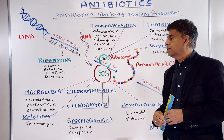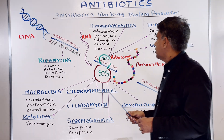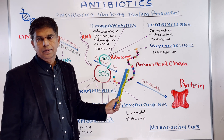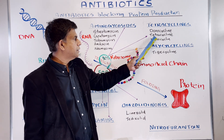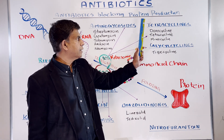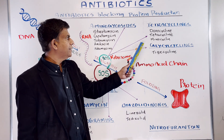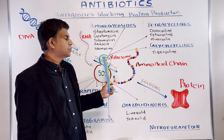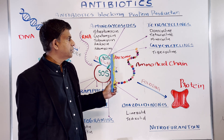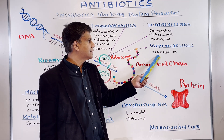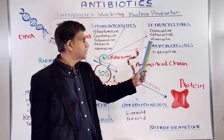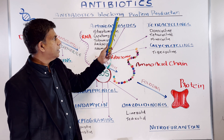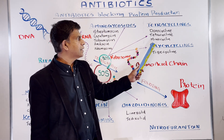Also acting on the 30S subunit is the tetracycline group: doxycycline, tetracycline, and minocycline — three drugs to know. One more group is glycylcyclines, which also affect the 30S subunit. The drug in that group is tigecycline, one of the newer drugs available. So remember: three classes act on the 30S subunit — aminoglycosides, tetracyclines, and glycylcyclines.